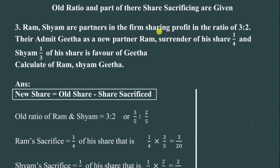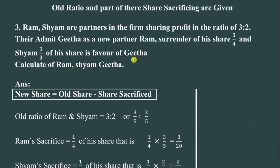Ram and Sham are partners in a firm sharing profit and loss in the ratio of 3:2. They admit Gita as a new partner. Ram surrenders 1/4 of his share and Sham surrenders 1/3 of his share in favor of Gita. We need to calculate the new profit sharing ratio of Ram, Sham, and Gita.